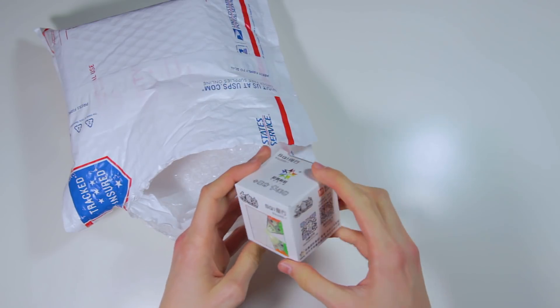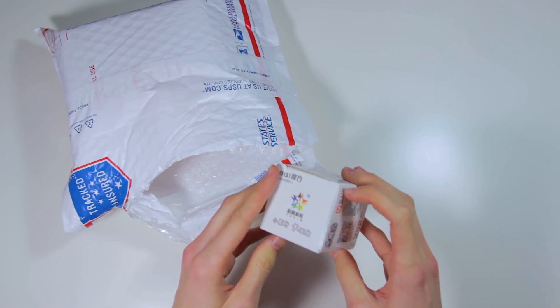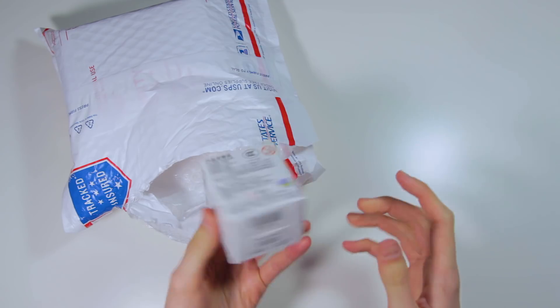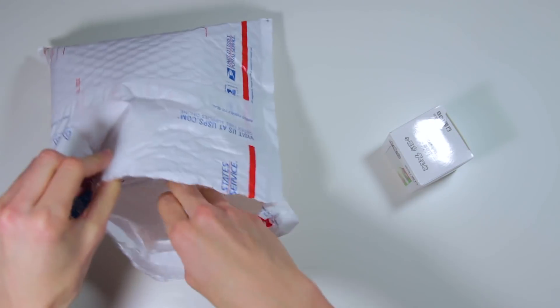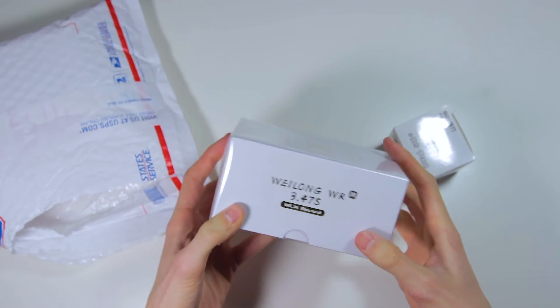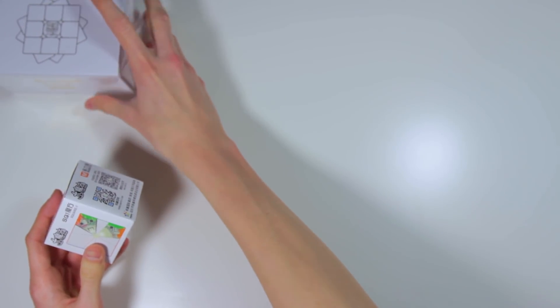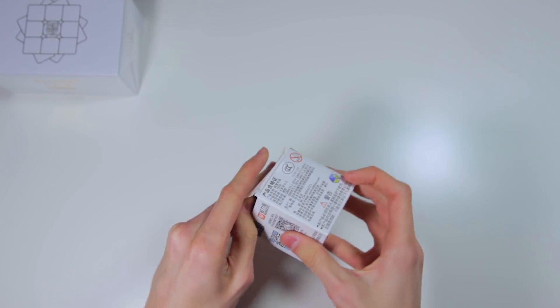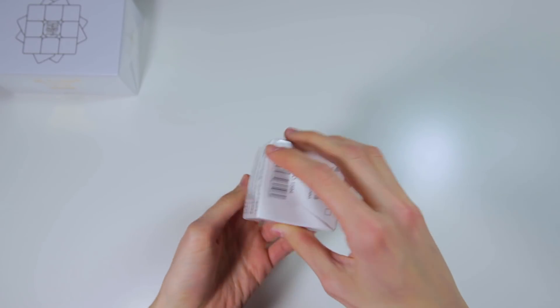Okay, so here we have what looks like the Yushin Little Magic Square One. I don't really do Square One, but I will look at that a little bit too. And here is the main event, the Weilong WRM. But I will take a look at this cube second, let me just really quickly look at this Square One.